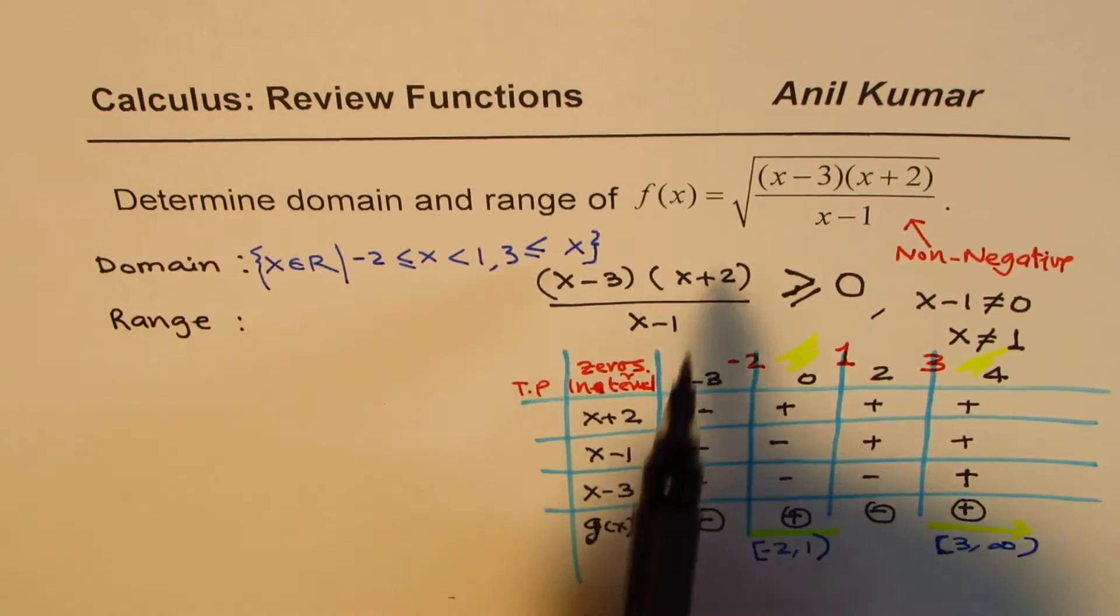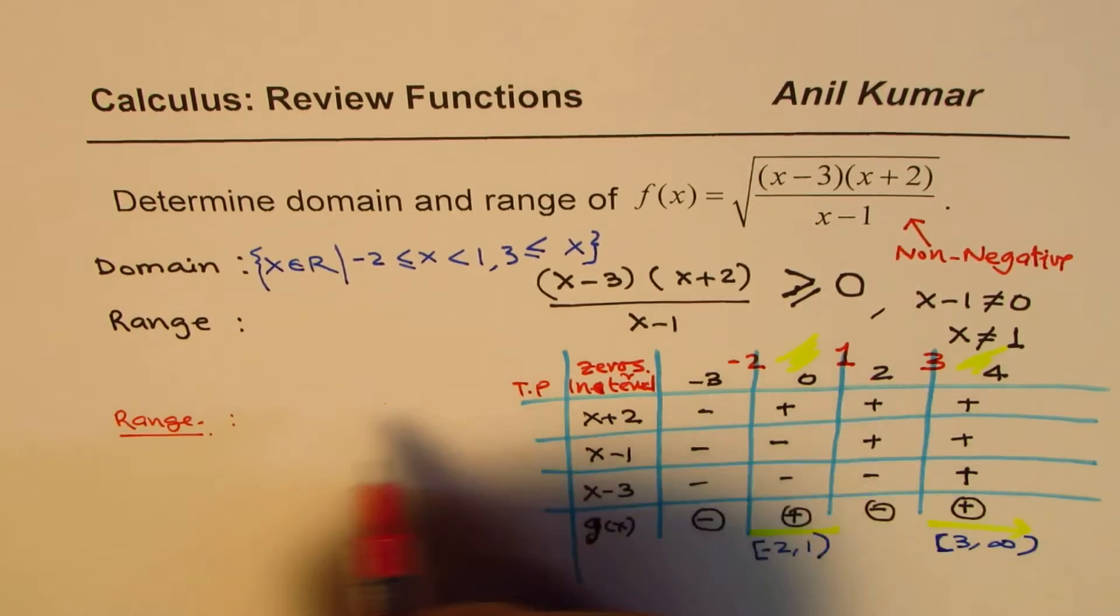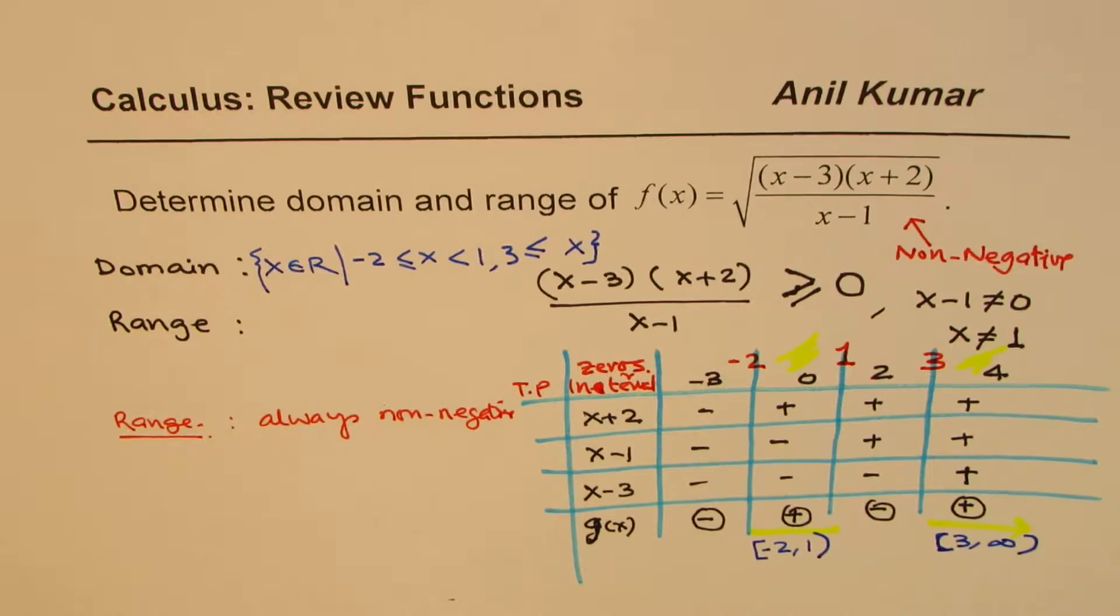Now, let's look into range. As far as the range is concerned, we know square root function is always positive. So, for range, the thinking is kind of like this. It is always positive. I should say non-negative. It could be 0. Non-negative. Now, what values are permitted here? This is what we need to see. So, it is a good idea to sketch the function.